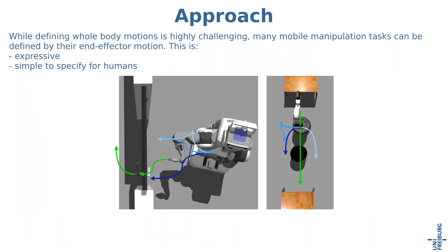While defining whole-body motions illustrated by the arrows below is highly challenging, many mobile manipulation tasks can be defined by their end-effector motion, shown in green. This is both expressive and simple to specify for humans.